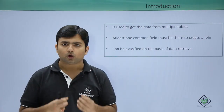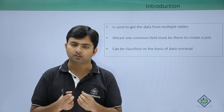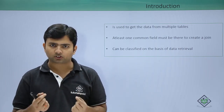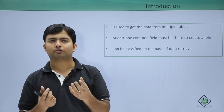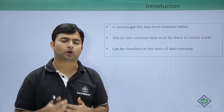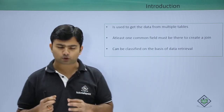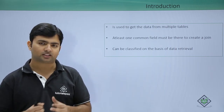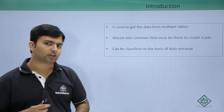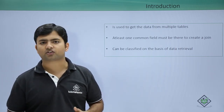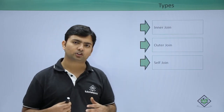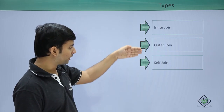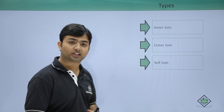Whenever you are joining two tables, there must be one common field between them, because that common field is required in order to join the tables. If you don't have that, you will not be able to join the tables. Based on data retrieval, we can classify joins into three varieties: inner join, outer join, and self join.